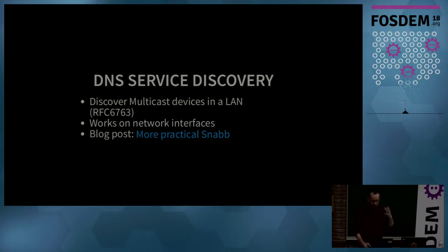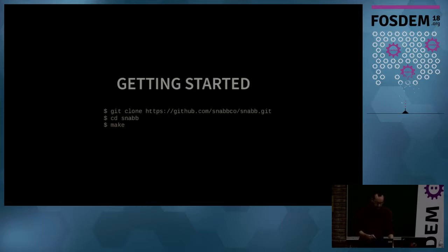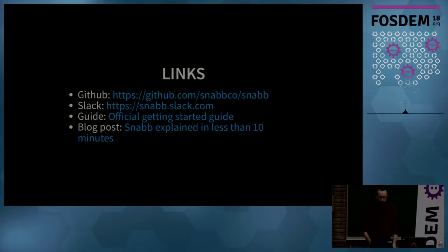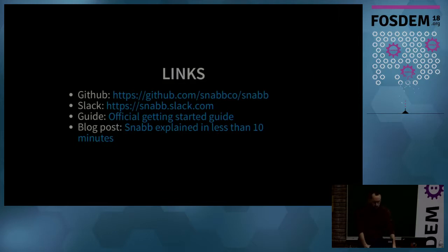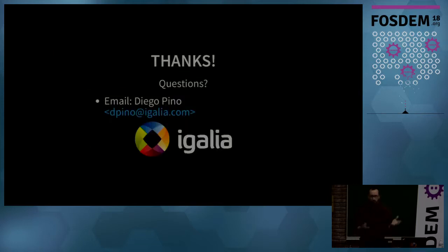I wrote a blog post about the entire development process from idea to code. To get started, all the source code is on GitHub: fetch it, cd into snap, and run make. The community also has a Slack channel at snap-slack.com, and there is an official getting started guide, though it may be a little outdated. A few months ago I wrote a blog post called 'SNAP Explained in Less Than 10 Minutes,' which is essentially this talk in blog format. I hope you like it and I'm glad to answer any questions.